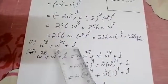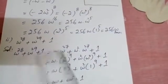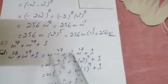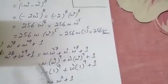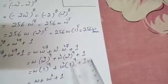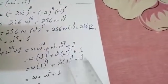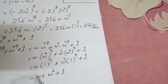Part number 2: evaluate ω²⁸ plus ω²⁹ plus 1. Breaking these down: ω²⁸ equals ω × ω²⁷ equals ω × (ω³)⁹ equals ω × 1 equals ω. Similarly, ω²⁹ equals ω² × ω²⁷ equals ω² × (ω³)⁹ equals ω². So the expression becomes ω plus ω² plus 1, and since 1 plus ω plus ω² equals 0, the total answer is 0.